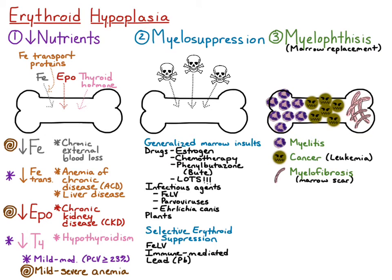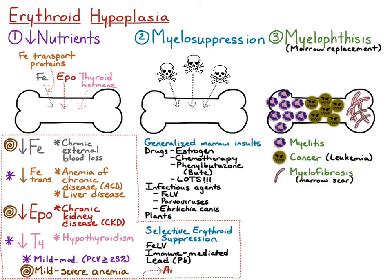Going back to all of the causes of erythroid hypoplasia, all of these causes can be broken down into two broad categories: those causes that just cause anemia without affecting neutrophils and platelets — with these causes, you would just expect to see a non-regenerative anemia.